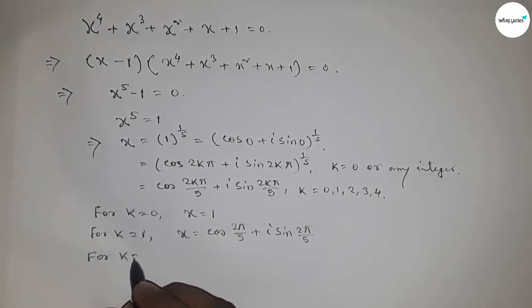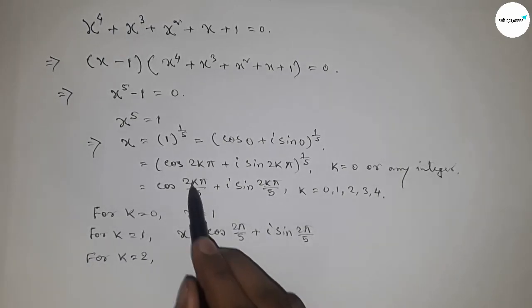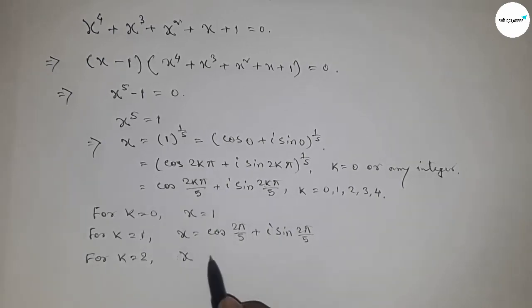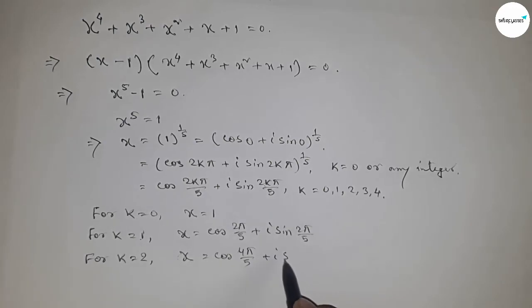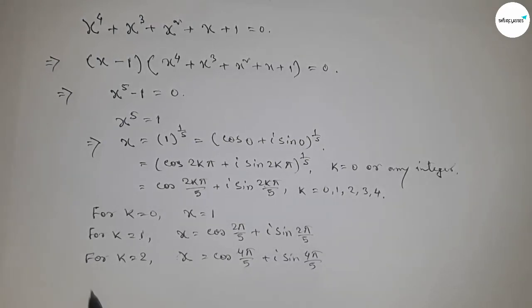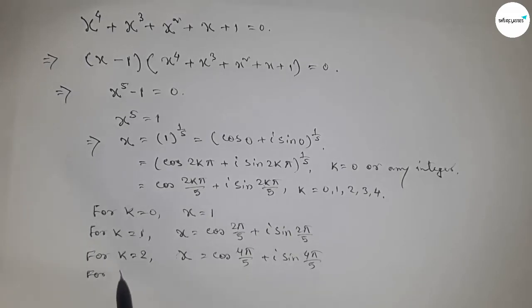+ i sin(4π/5). For k = 3, if you put k = 3 here, then we can write